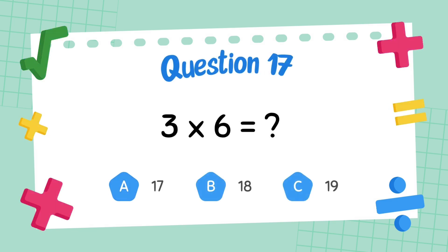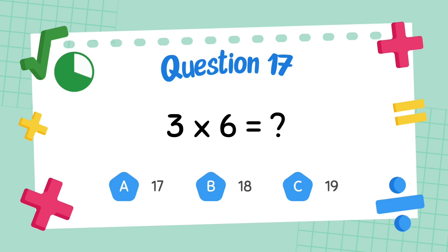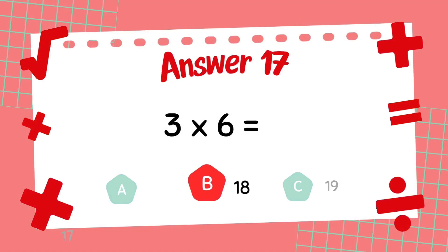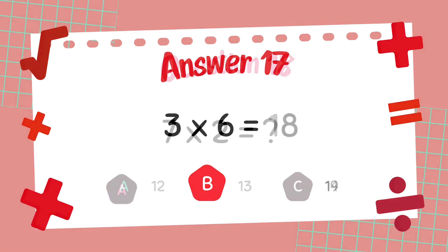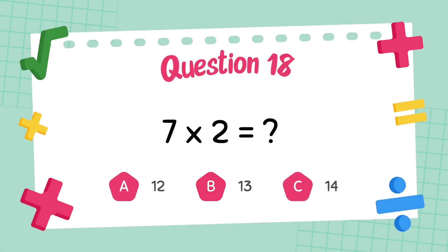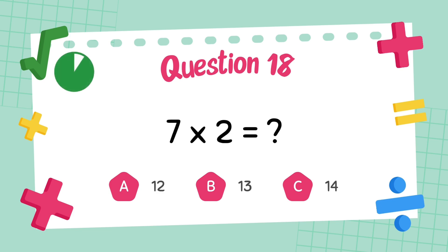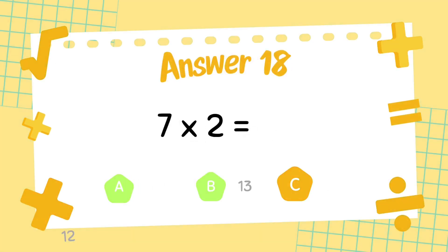What is 3 multiply 6? What is 6 multiply 6? The answer is 18. What is 7 multiply 6? The answer is 18.